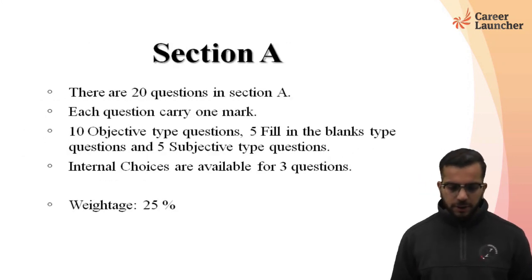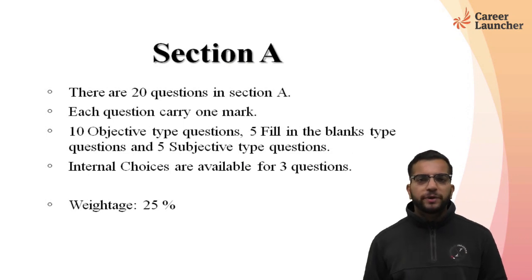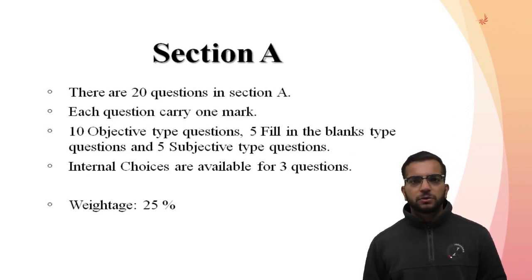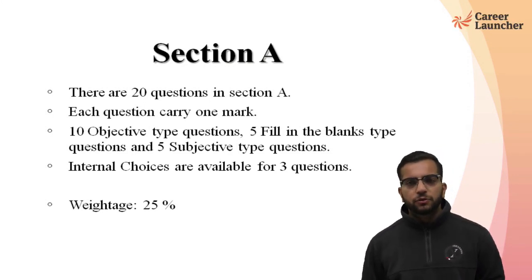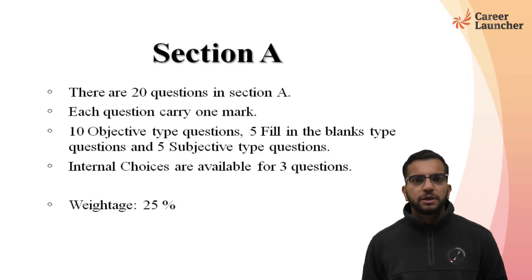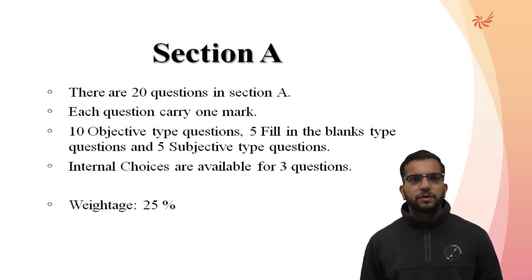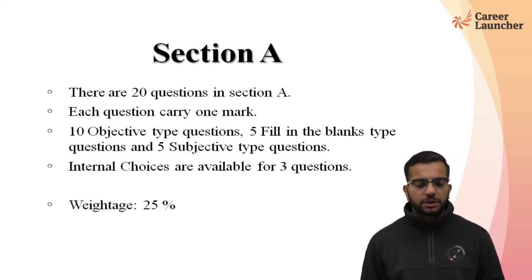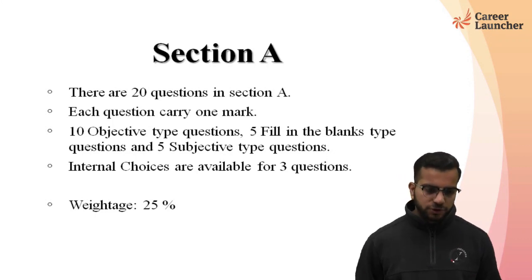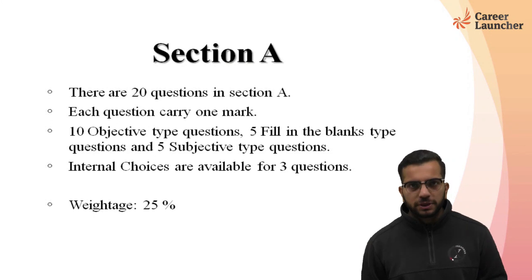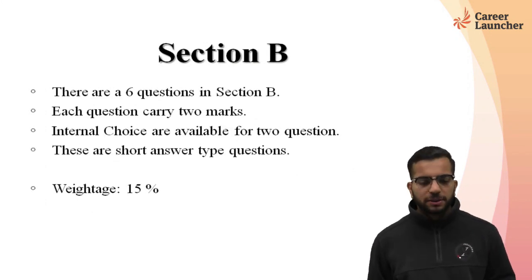In Section A, there are 20 questions, each carrying one mark. These are divided into three sub-sections: 10 questions are MCQ-type objective questions with four options to choose from; 5 questions are fill-in-the-blank type where you write the answer in the exam sheet; and 5 questions are short answer type requiring brief explanations of reasoning. Internal choices are available for three questions only, and the overall weightage of this section is 25 percent.